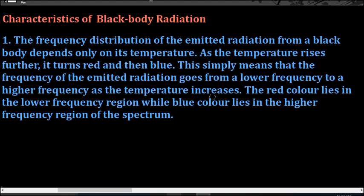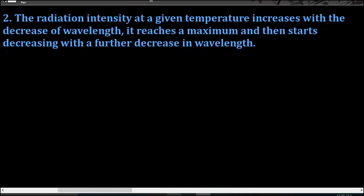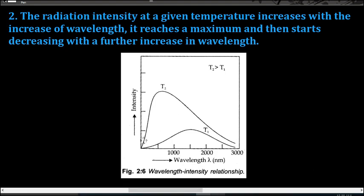The blue color lies in the higher frequency region of the spectrum. The second characteristic is that the radiation intensity at a given temperature increases with the increase in wavelength, then reaches a maximum, and then starts decreasing with further increase in wavelength. We can understand this through a graph — on the x-axis we have plotted the wavelength and on the y-axis the radiation intensity. At a given temperature, radiation intensity increases with wavelength, reaches a maximum point, and then decreases with further increase in wavelength.